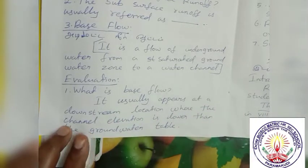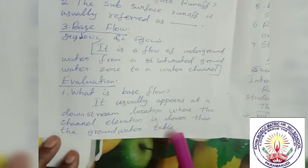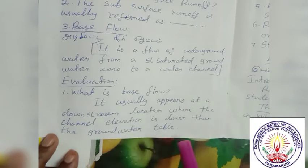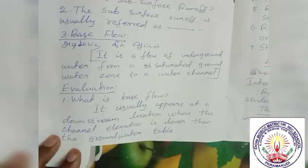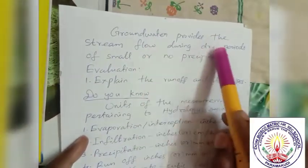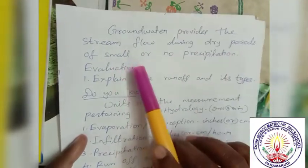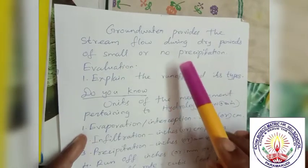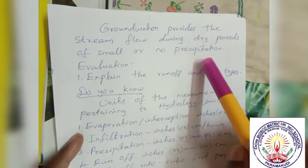Downstream is a location where the channel elevation is lower than the groundwater table. Groundwater provides the stream flow during dry periods of small or no precipitation.